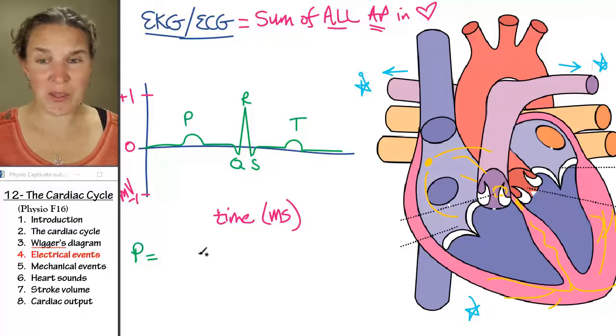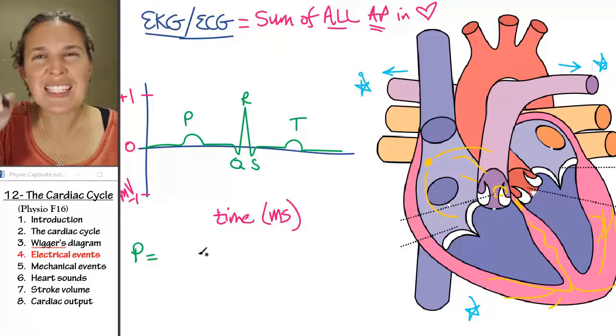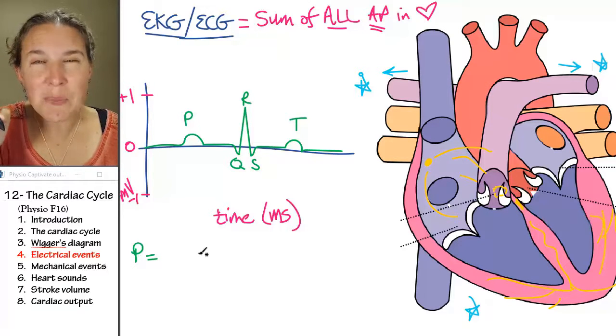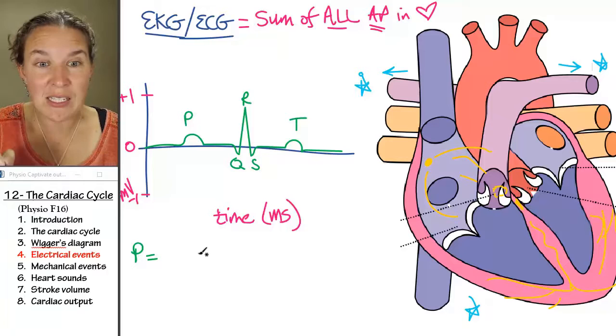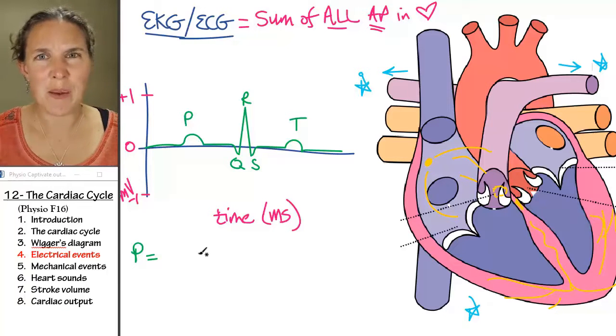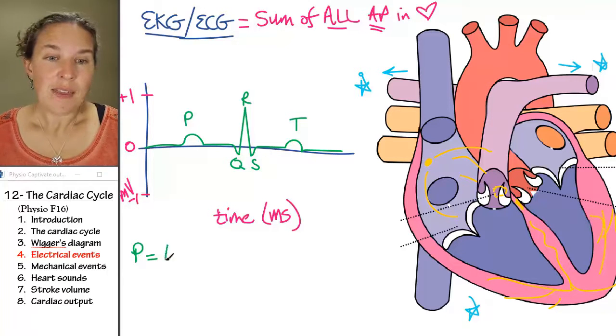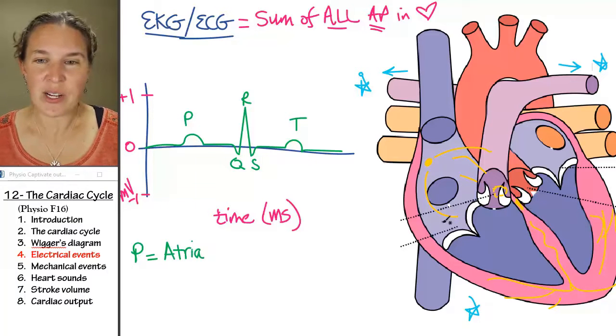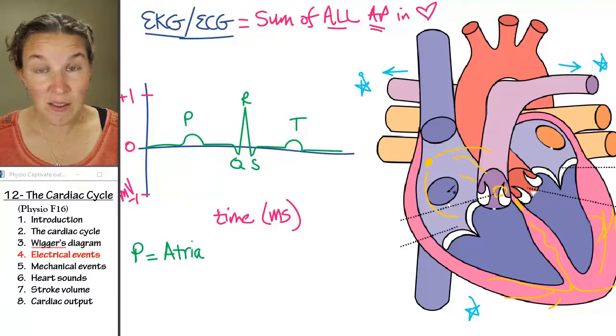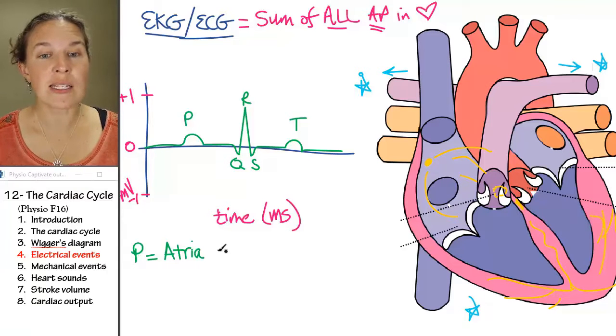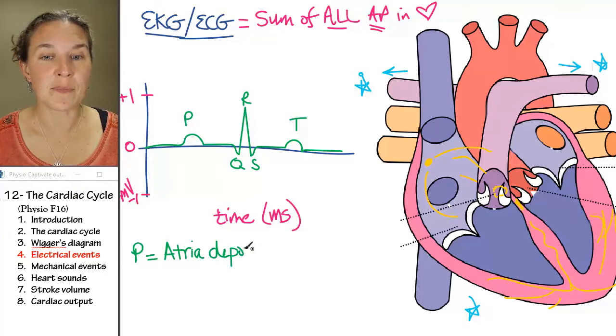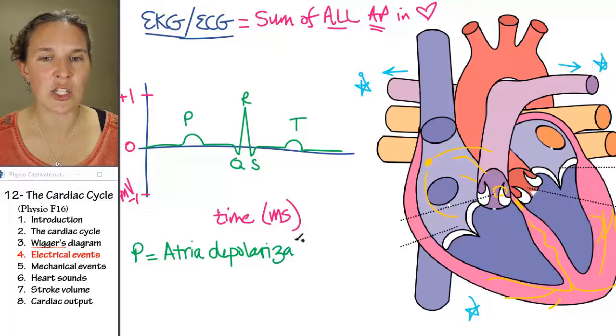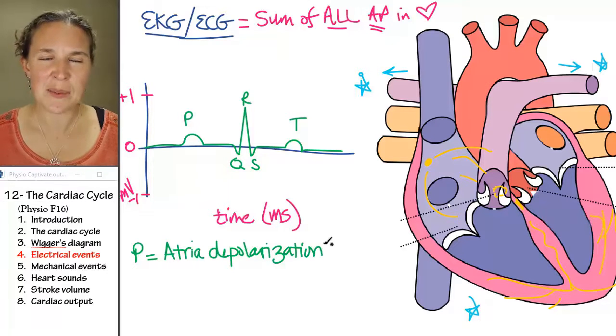The P wave. Really, we start with the P wave. So what electrical activity would you expect to be taking place during that first little bump? Well, the atria, the cells in the atria, the autorhythmic cells, followed by the contractile cells are all depolarizing, depolarization. Do you agree with that? Does that make sense?